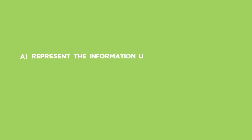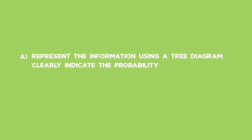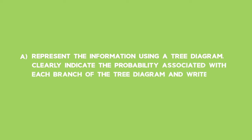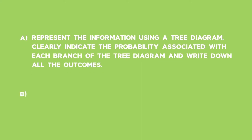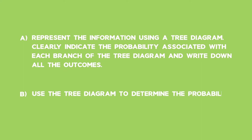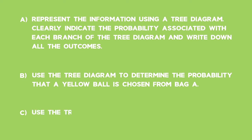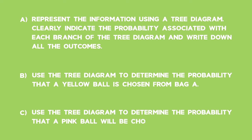A bag is chosen at random and a ball is then chosen at random from the bag. Part A: represent the information using a tree diagram, clearly indicating the probability associated with each branch and writing down all the outcomes. Part B: use the tree diagram to determine the probability that a yellow ball is chosen from Bag A. Part C: use the tree diagram to determine the probability that a pink ball will be chosen.